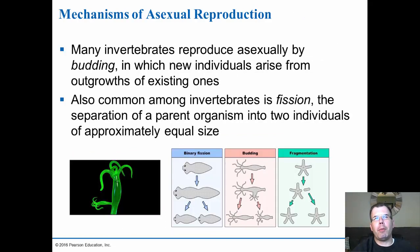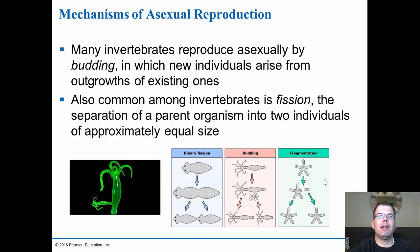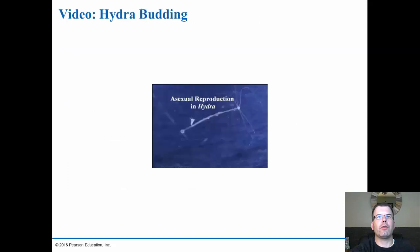In many invertebrates, reproduction occurs by budding — the classic example being the hydra. This is done through mitosis and is a genetic clone; eventually the bud breaks off and forms a new adult. Other forms of asexual reproduction include binary fission, where an organism grows large enough to split in two, budding, and fragmentation — like chopping arms off a starfish or slicing a worm in half to create new organisms, all sharing the same genes as the parent.